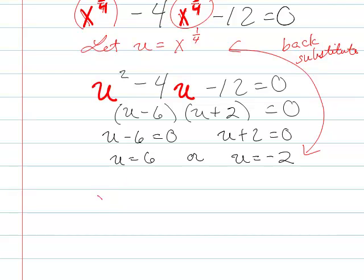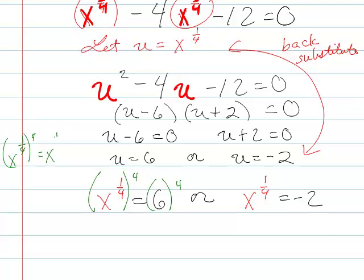Alright, so everywhere I see a u, now I'm going to put an x to the 1 4th. And to get rid of the 1 4th, I need to raise each thing to the 4th power, right? x to the 1 4th, all to the 4th, is x to the 1 4th times 4. It's x to the 4 over 4, which is x to the 1. So that's how I get rid of the 4th root, is I take everything to the 4th. So that gives me x equals 6 to the 4th, which is something like, I don't know, 36 squared.